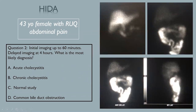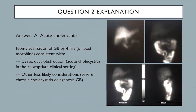This is a 43-year-old female with right upper quadrant abdominal pain. Initial 60 minutes of imaging shows radiotracer in the liver with excretion into the common bile duct and small bowel. However, gallbladder is not seen — radiotracer activity is not seen in the gallbladder. Delayed imaging again shows no radiotracer activity in the gallbladder, compatible with acute cholecystitis.